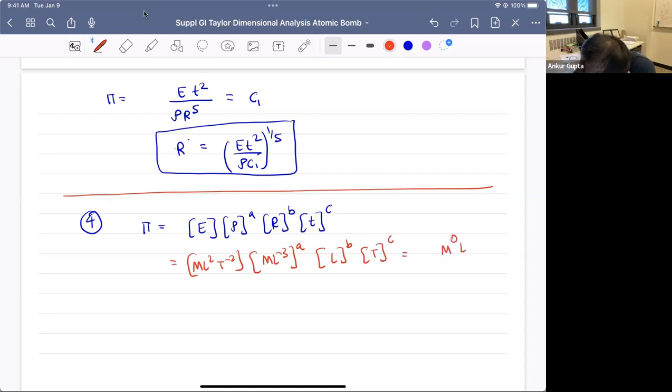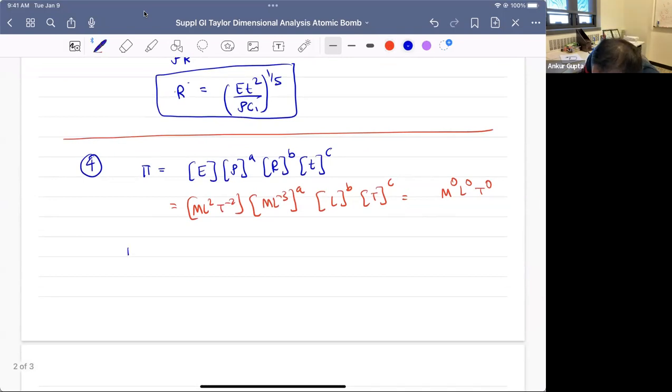And this is equal to m⁰l⁰t⁰. So now we will compare, we will find exponents. So we will get essentially 1 + a is equal to, there is no mass, is equal to 0. Then length is 2 - 3a + b is equal to 0. And time is -2 + c is equal to 0. And so from here we get a is equal to -1. This implies b is equal to -5, this implies c is equal to 2.